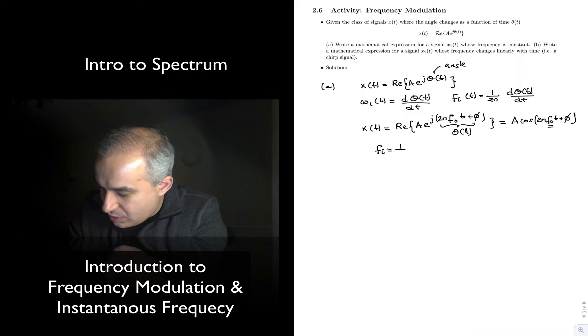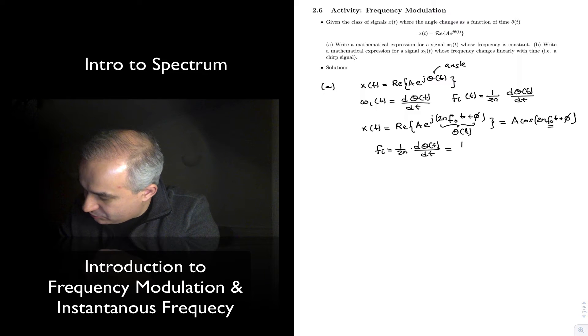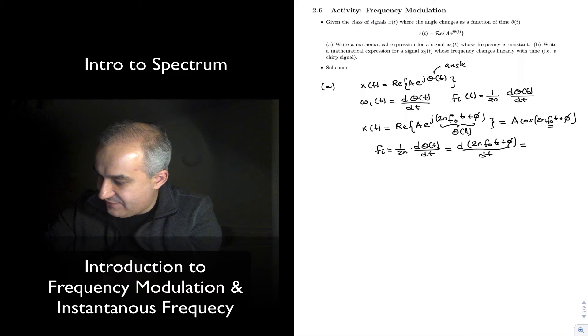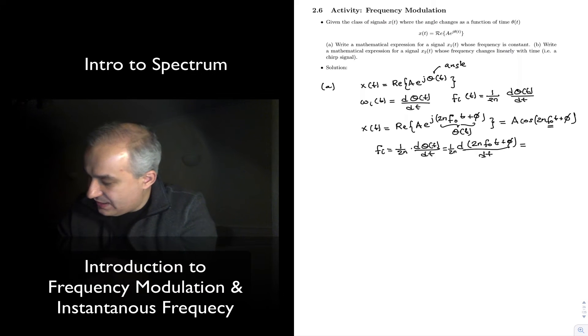So, fi is equal to 1 over 2π, derivative of the angle, with respect to time. And we have that we are going to do the derivative of 2π f0 t plus a phase, with respect to time. And this is clearly, we have a 1 over 2π.